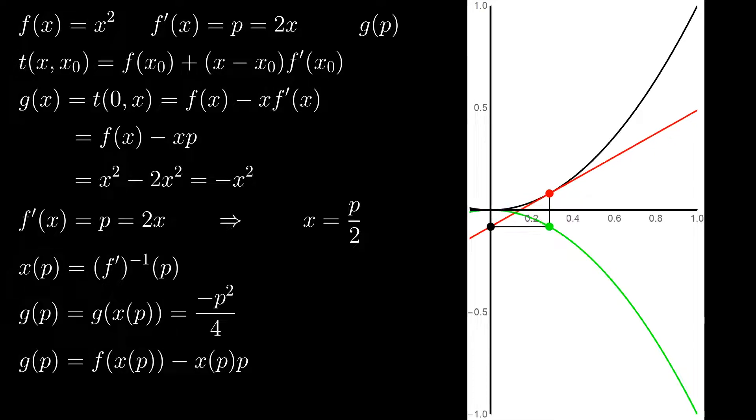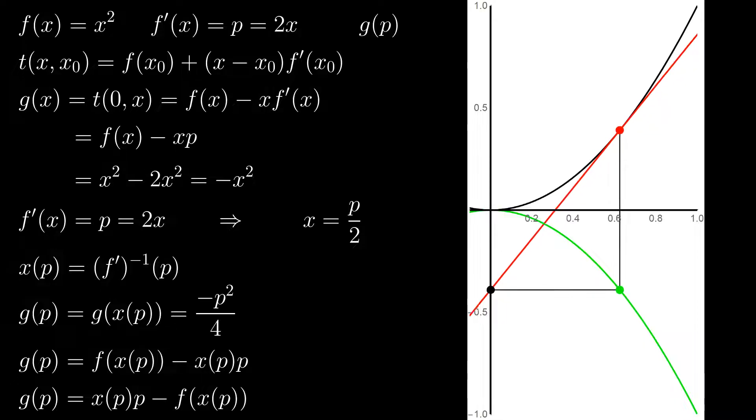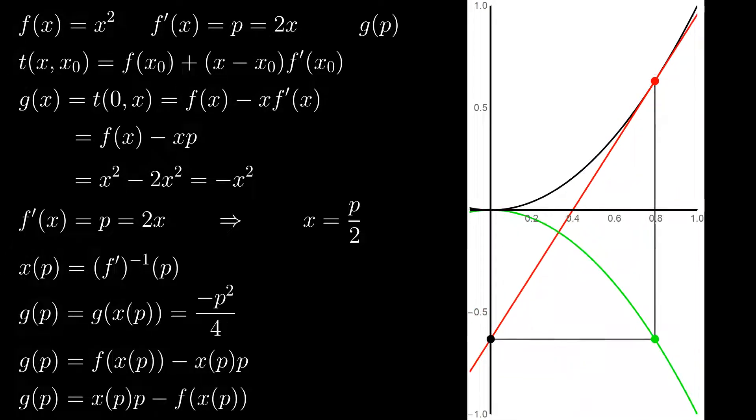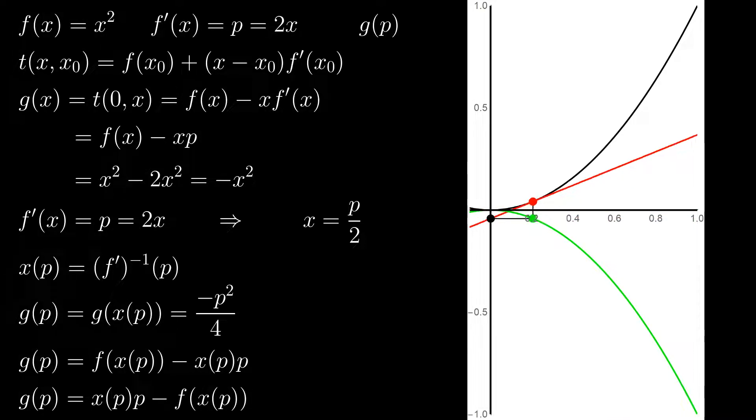which is g of p equals f of x of p minus x of p times p. If you look into a textbook, you might find a different expression, where signs are switched. And actually, both of these transformations do appear in physics. The one I derived is even a little less natural from a mathematical point of view, but the difference is just a minus sign.